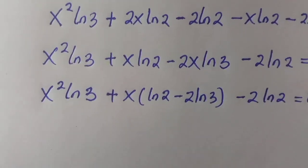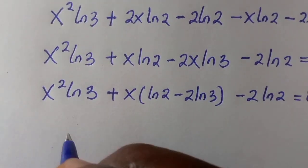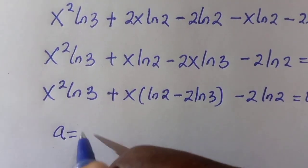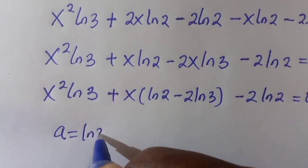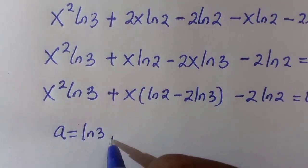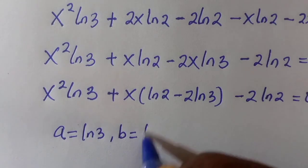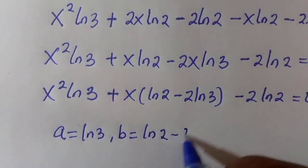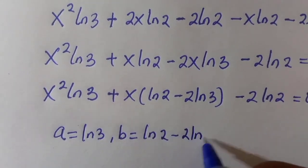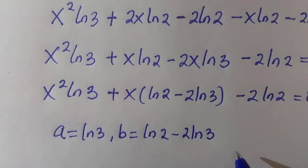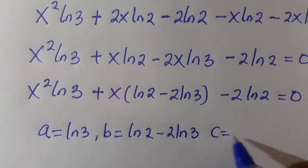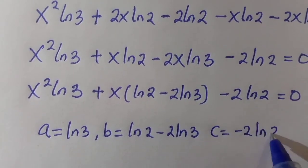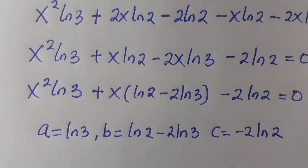Let's identify the coefficients from this quadratic. We have a equals ln 3, b equals ln 2 minus 2 ln 3, and c equals minus 2 ln 2.